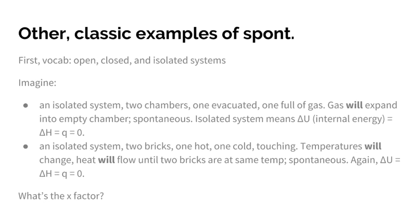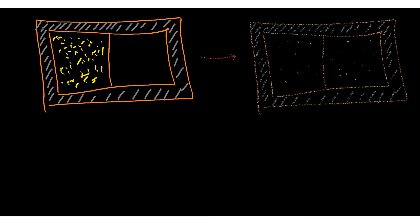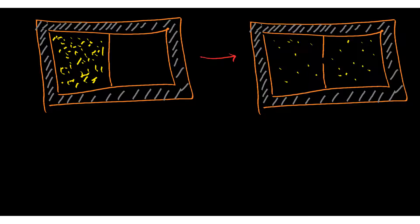Now, imagine you have an isolated system with two chambers, one that is completely empty, it's a vacuum, and the other one is full of gas. When you open up a spigot so that gas can flow between the two chambers, then the gas in the filled chamber will expand into the empty chamber. That's a spontaneous process. There's nothing that can prevent that, except literally sealing it off, closing the systems off from one another.